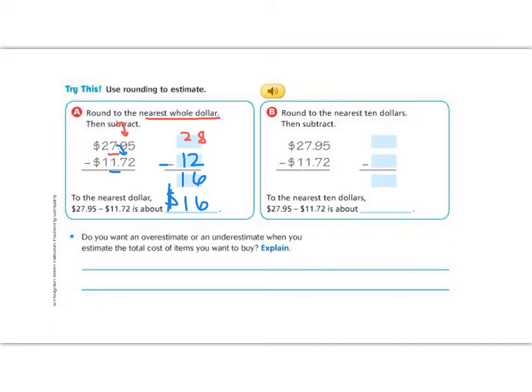Let's try try this B. Try this B says we are going to round to the nearest $10, and then subtract. So when we look at the nearest $10, we need to look in the tens place. So in the tens place, I have a 2 in my first number. So I underline the digit and look next door. 7 is going to make me round up, so 27.95 is going to change into a 30.